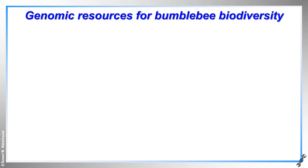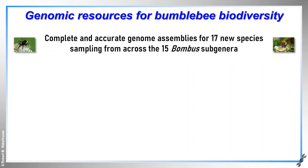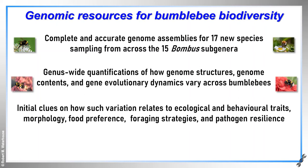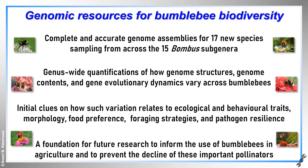In summary for bumblebees, we believe that these genomic resources will help to better understand and monitor bumblebee species health as well as local and global diversity. Our evolutionary analyses span the entire genus and provide a balanced overview of genomic and genetic variation in bumblebees. We can also begin to link this variation to their remarkable diversity in morphology, colour patterning, food preference, pathogen incidence and other diverse life history traits. Importantly, these resources offer a foundation for building on research on the use of bumblebees in agriculture and to ensure the long-term future of these important pollinators.